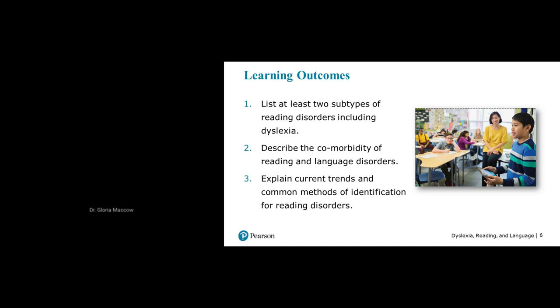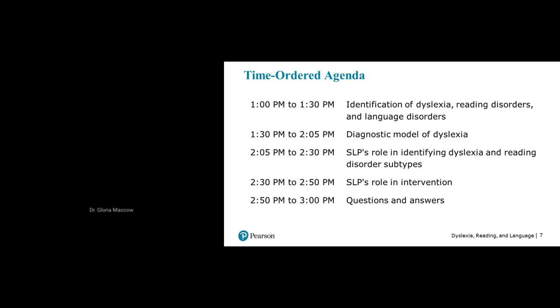To get us started, by the end of our 120 minutes today, we'd like you to be able to list at least two subtypes of reading disorders including dyslexia, describe the comorbidity of reading and language disorders, and explain current trends and common methods of identification for reading disorders. We'll cover four broad areas: identification of dyslexia and reading and language disorders, a diagnostic model of dyslexia, the role of the SLP in identifying dyslexia and reading disorder subtypes, and the role of the SLP in intervention, concluding with Q&A.